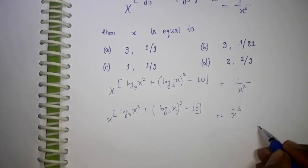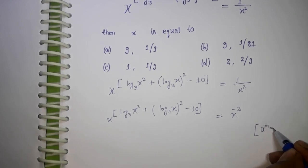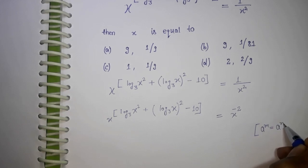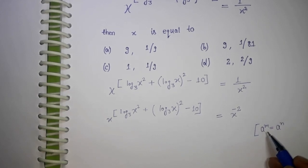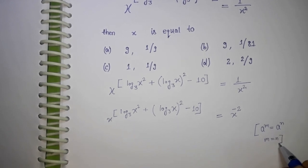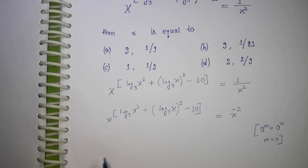We have one formula: if a^m = a^n, and bases are the same, then the powers are equal. I'm going to use this identity here.